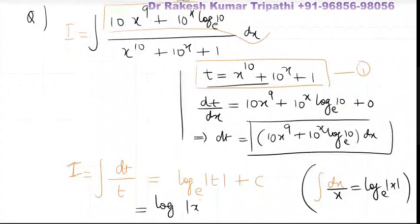And at the last we will have to replace t. So on replacing, t is x to the power 10 plus 10 to the power x plus 1, base e plus integral constant c. So finally this is the integration of the given expression.